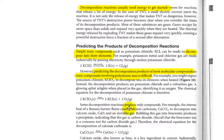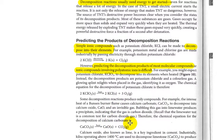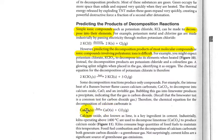Some decomposition reactions produce only compounds. For example, the intense heat of a Bunsen burner flame causes calcium carbonate to decompose into calcium oxide and also carbon dioxide. We can see that doesn't necessarily break down into elements. It has two simpler compounds.